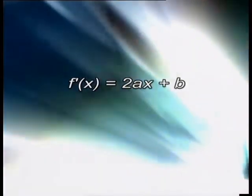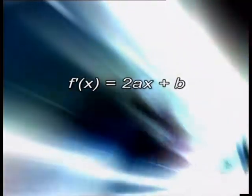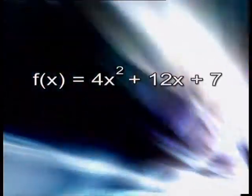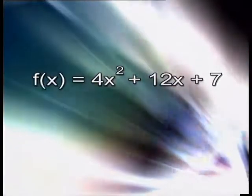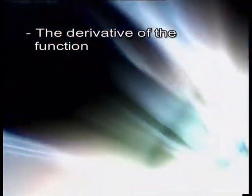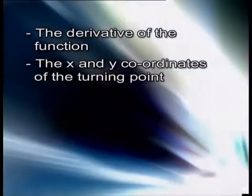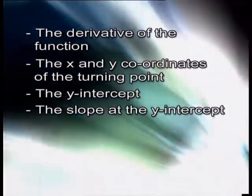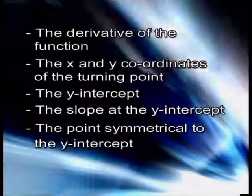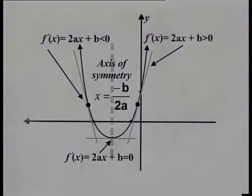The slope of a quadratic function can also be found by differentiating the function, giving the result f'(x) = 2ax + b. The learners are given the quadratic function f(x) = 4x² + 12x + 7 and have to determine the derivative, the x and y coordinates of the turning point, the y-intercept, the slope at the y-intercept, and the point symmetrical to the y-intercept. They also have to make a sketch of the curve.